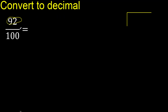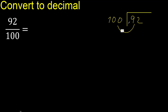92 divided by 100. 92 is less, therefore complete with 0. Here: 0 point — write the decimal point only once.